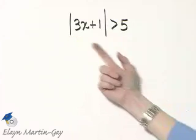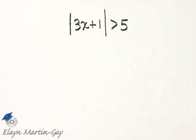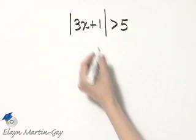We are solving an absolute value inequality. This is the absolute value of 3x plus 1 is greater than 5. For this to be true,